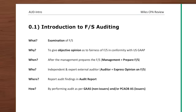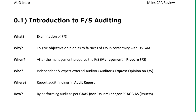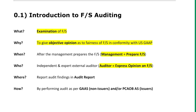Let's look at page two of our audit intro, which has the Five W's and the One H for audit. Under 'What is an audit,' highlight: examination of financial statements. Under 'Why,' highlight: to give objective opinion as to the fairness of financial statements in conformity with US GAAP. Under 'When is an audit done,' highlight: management prepares financial statements — so an audit is done after management has prepared them. Under 'Who does the audit,' highlight: auditor expresses opinion on financial statements.